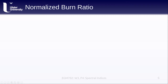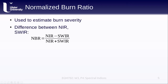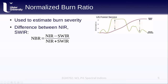Another example of a normalized difference index is the Normalized Burn Ratio, used for studying wildfires and their effects — specifically to estimate burn severity. It is calculated as the difference between the near-infrared and shortwave infrared reflectances. As shown in this diagram from the US Forest Service, burned areas have relatively low reflectance in the near infrared and relatively high reflectance in the shortwave infrared, while healthy vegetation shows the opposite pattern.